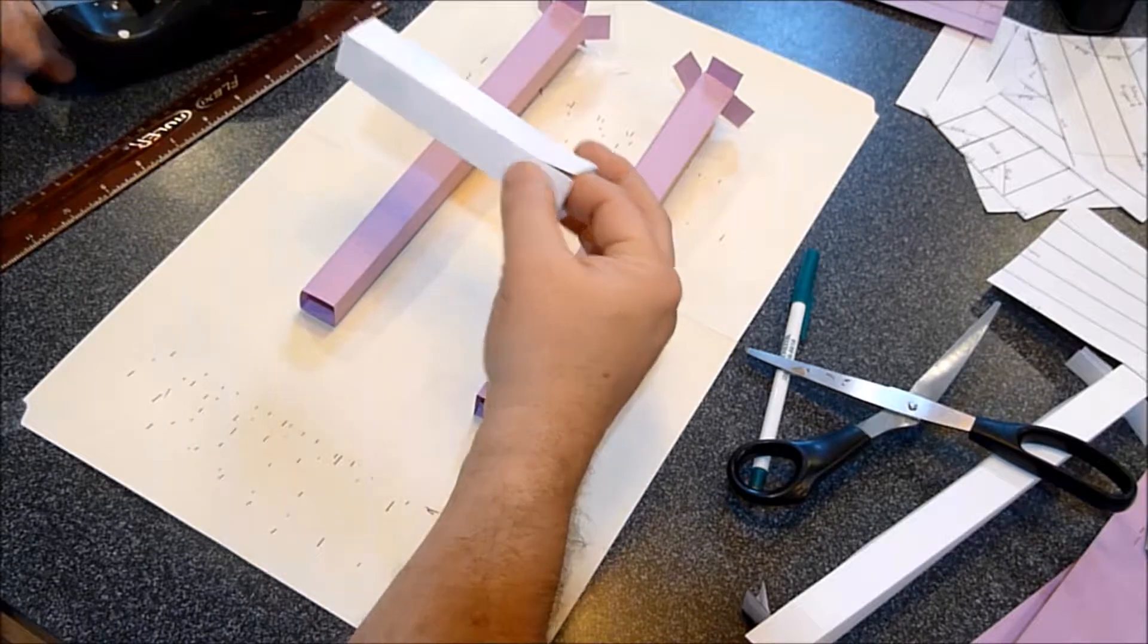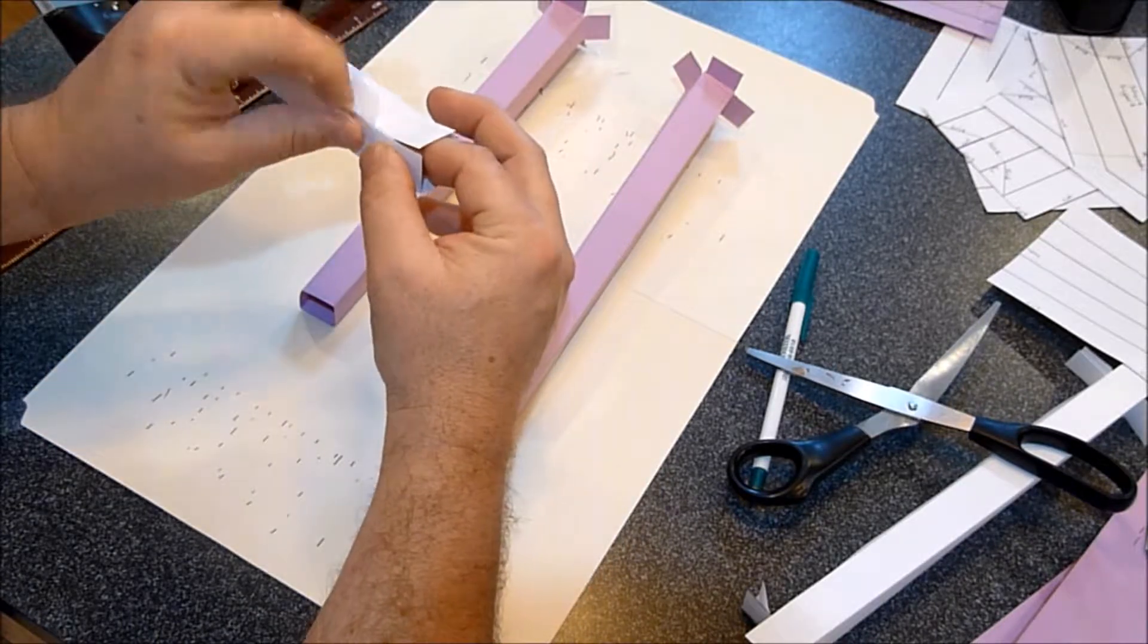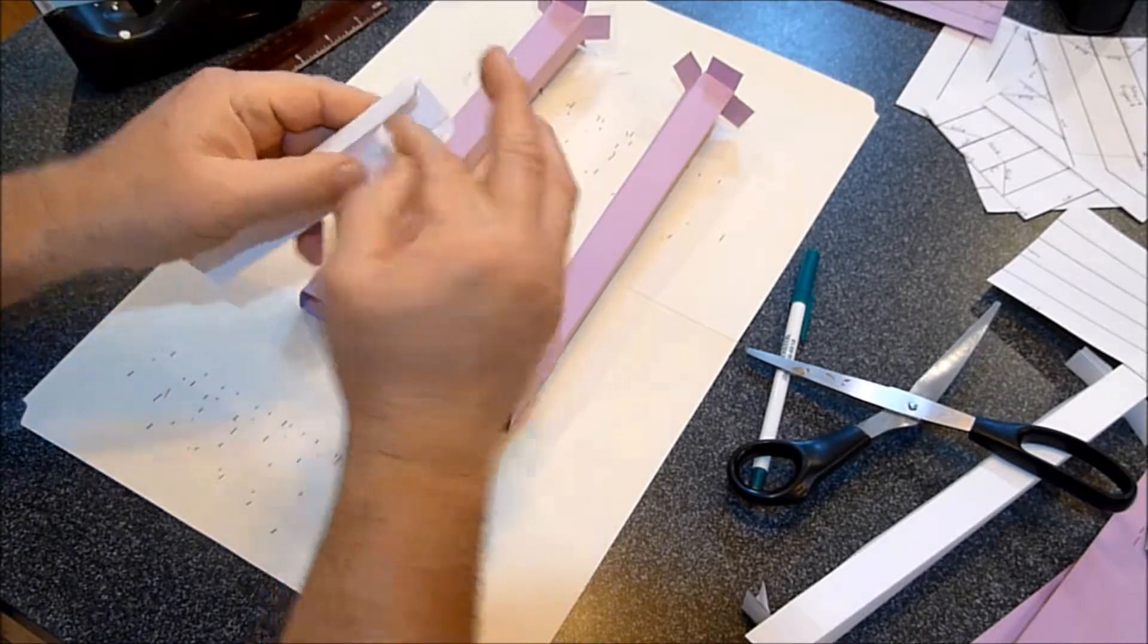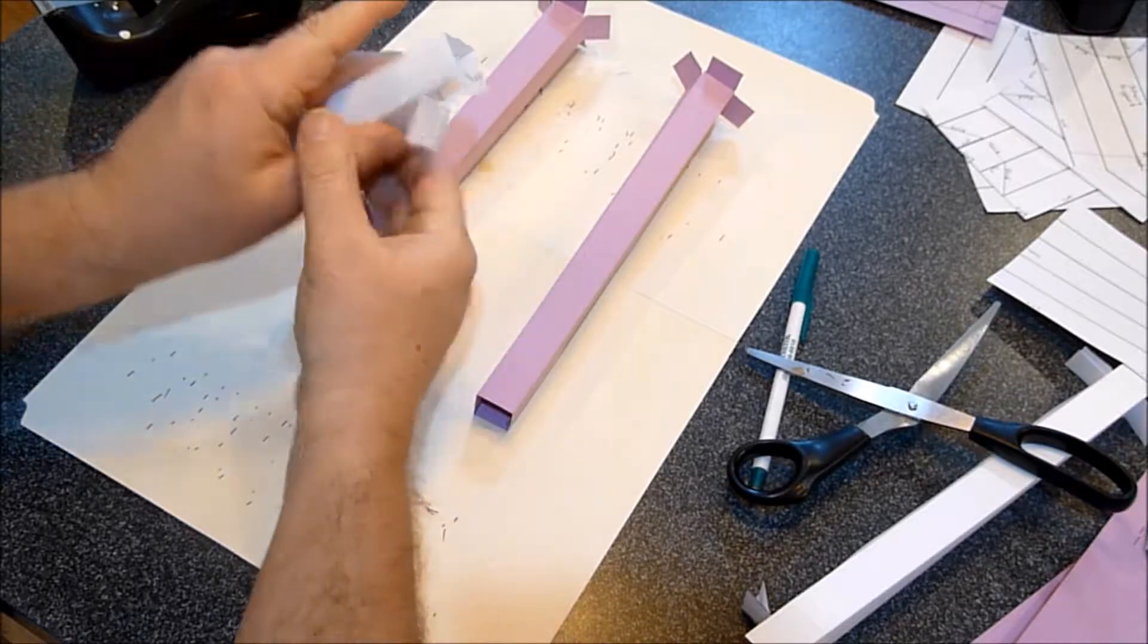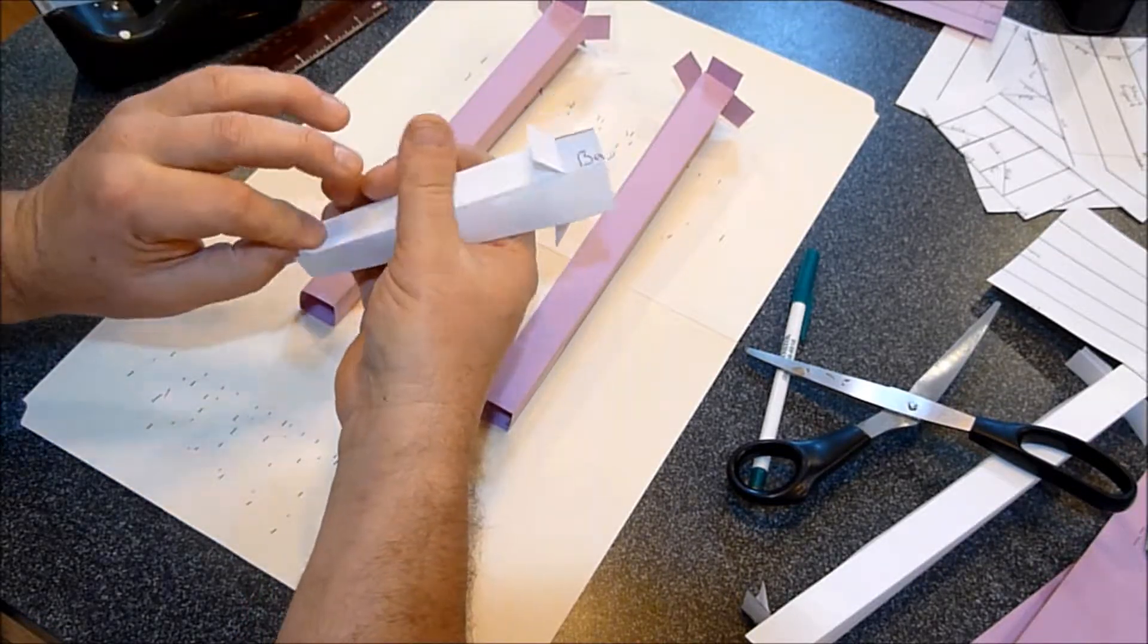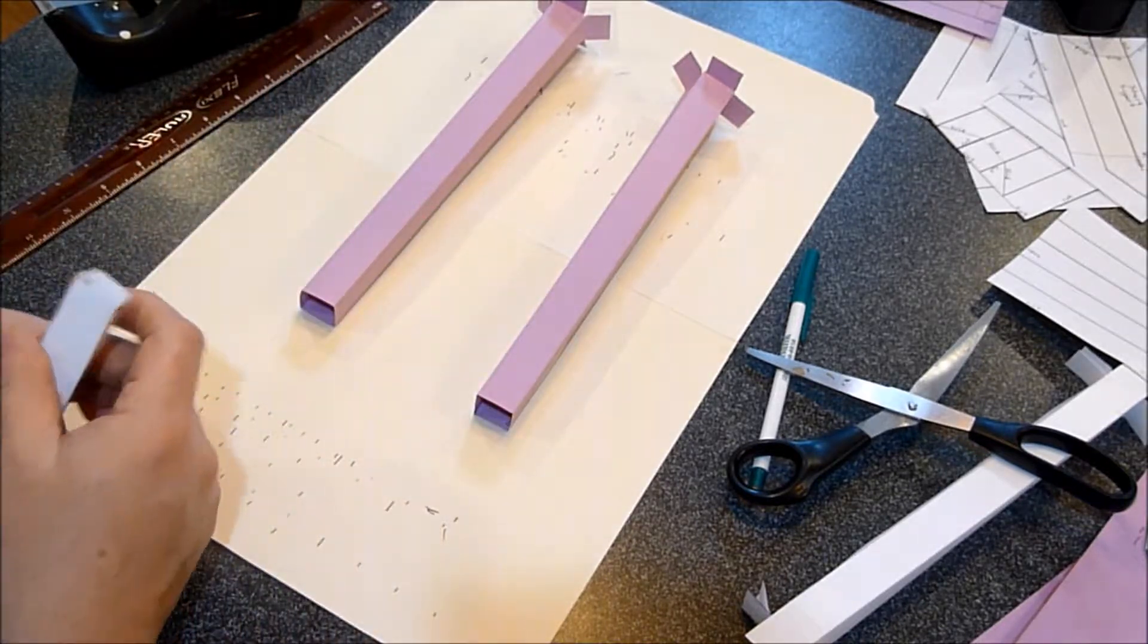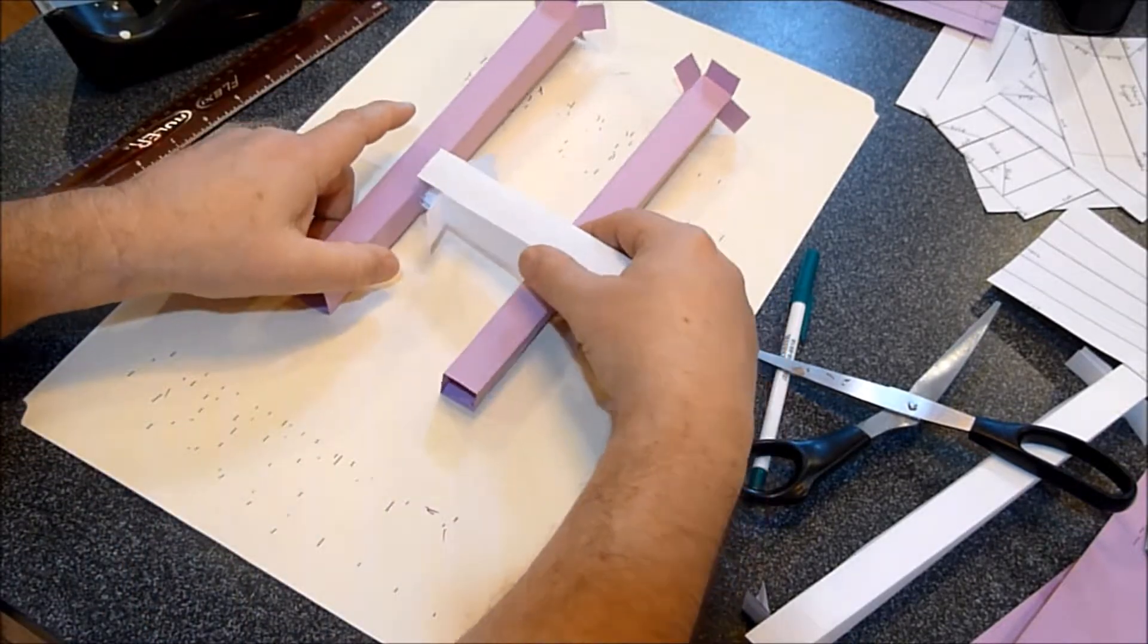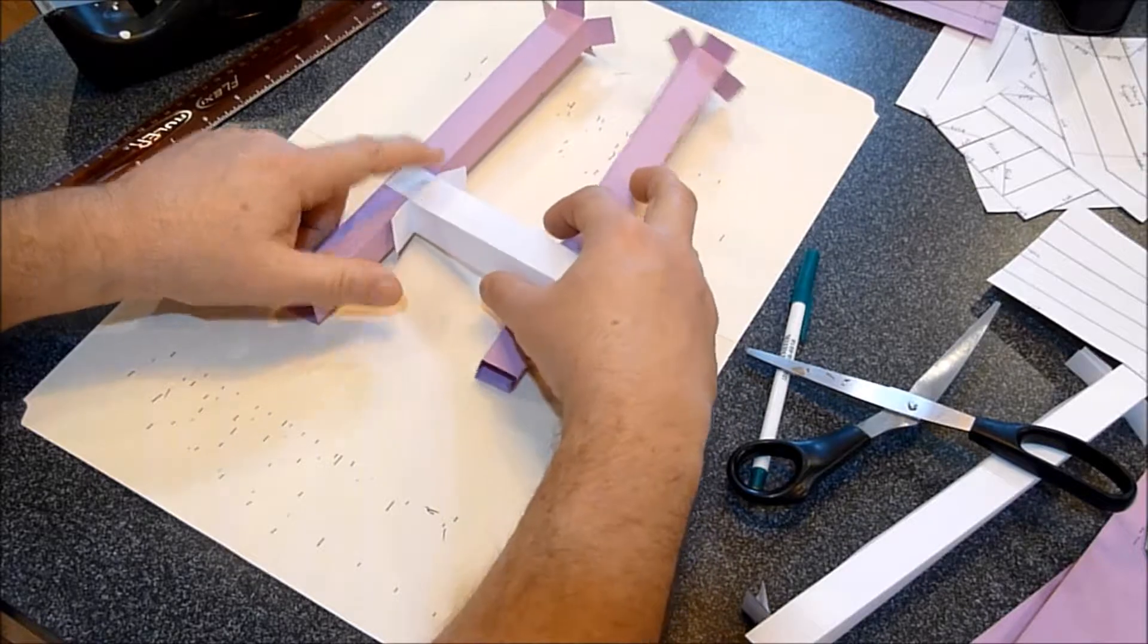So then you just tape it like usual and then do your folds and you will be able to put that beam across a shorter span.